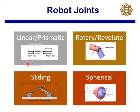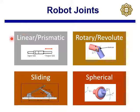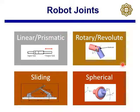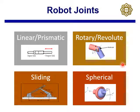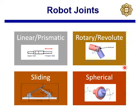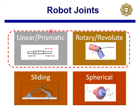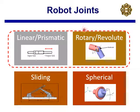In our course, we will limit our discussion to only prismatic and revolute joints, because we will be mostly focusing on industrial robots. Industrial robots will have mostly either linear or rotary joints. So the scope of our course concentrates only on linear prismatic or rotary revolute joints.